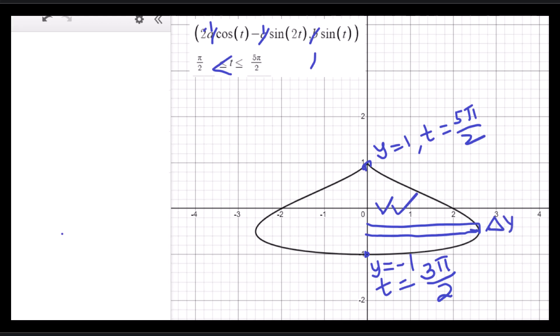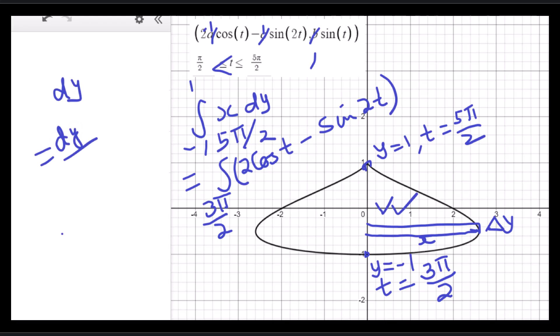We have delta y and this is x, so we can go x dy with y going from negative 1 to 1. We can change that from 3π/2 to 5π/2. So x is 2 cosine t minus sine 2t, and dy is dy/dt times dt. Since y is sine t, dy/dt will become cosine t.